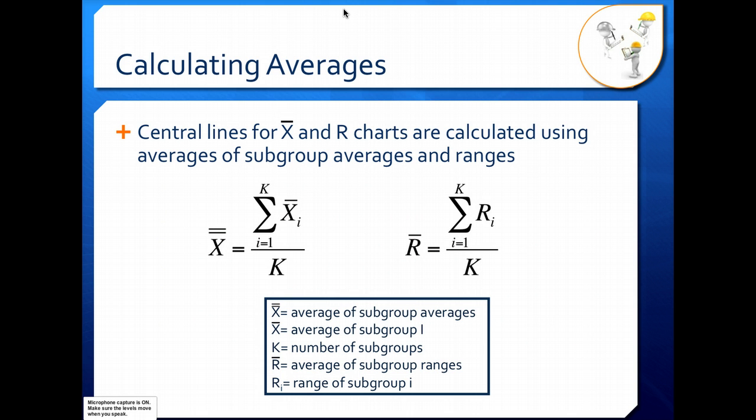To calculate the average central lines for your X-bar and R charts, you use these formulas as shown here. Here we have summation notation. That's what this big sigma means right here. We're summing all of our subgroups from i equals one, where i is just the number of subgroups you happen to be on, to K, the total number of subgroups you have.